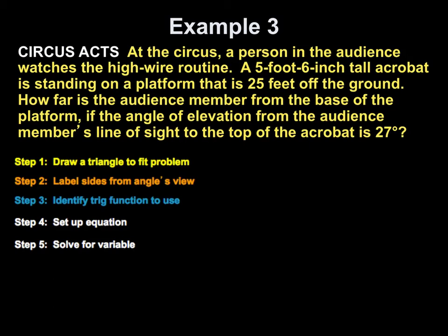Alright, example number three, we have a person in an audience watching a high wire routine. So, if this little dot represents the person in the audience, they are some number of feet away from a platform that is 25 foot tall but in addition to that, there is a 5 foot 6 inch acrobat standing on top. So, I have 25 feet that goes to the top of the acrobat plus my 5 foot 6 inch tall acrobat. So, that would be plus 5.5. 5.5 because the 6 inches counts for a half of a foot. So, if you need to go back because I didn't read this problem and got distracted by the bell, but if you need to go back and read the problem again, then go ahead and do that.